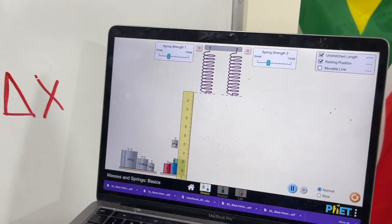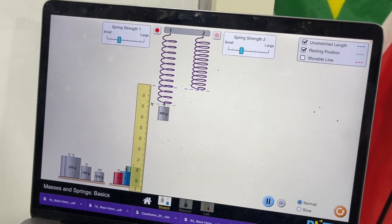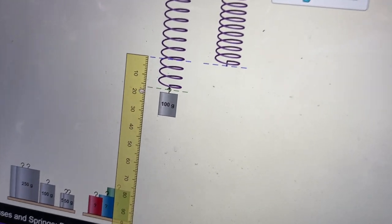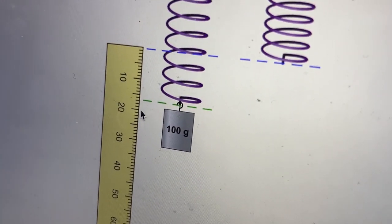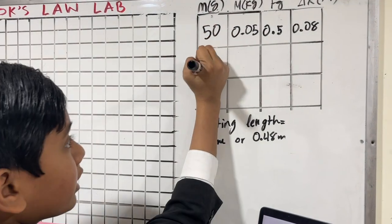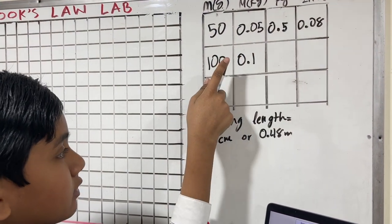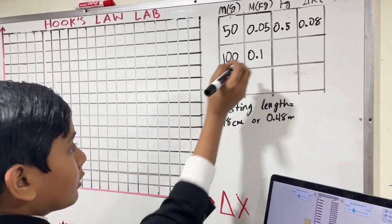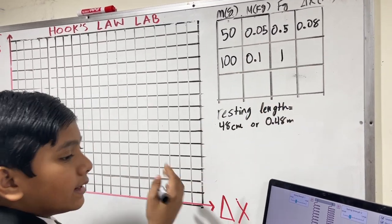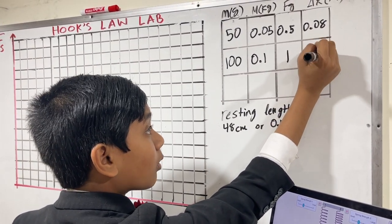Our fg would be multiplying by g, which is 10, so that is 0.5 newtons, and our delta x is, in meters, 0.08 meters, because it's 8 centimeters. Now, let's take this 50 gram mass off and drop a 100 gram mass on. And you can see that the new resting position is at about 16 centimeters.